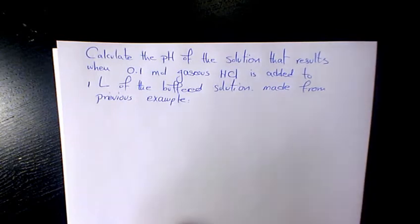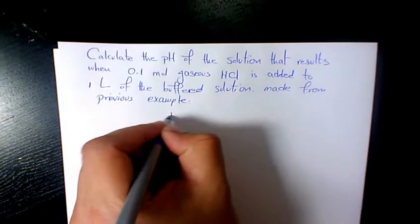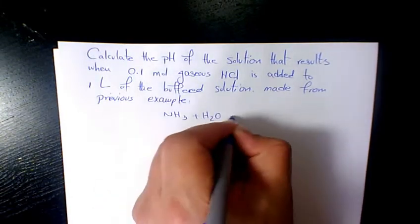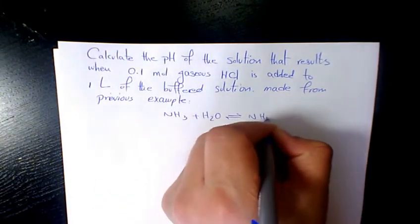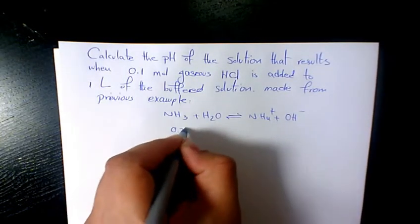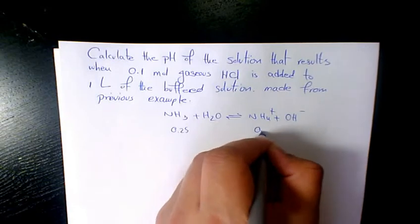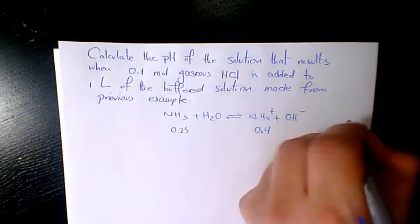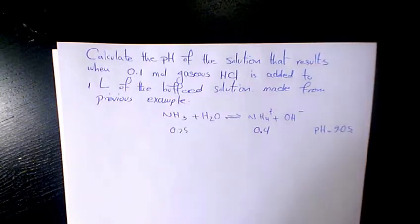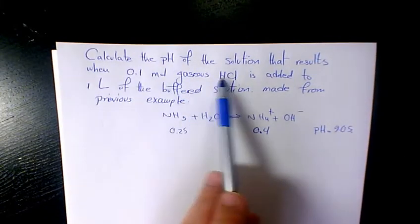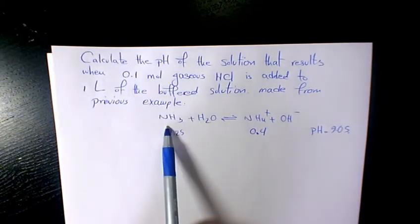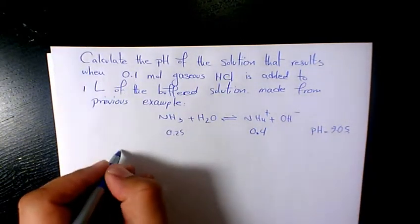In the previous example we had this buffer solution: NH3 + H2O ⇌ NH4+ + OH-. We saw this one is 0.25 and this one is 0.4, and we found that the pH is 9.05. Now when we add 0.1 mole of HCl, HCl is a strong acid and is going to react with NH3.